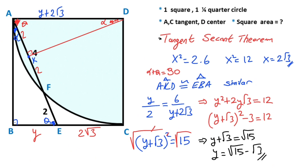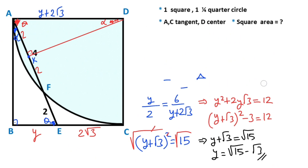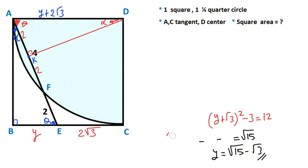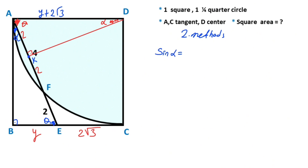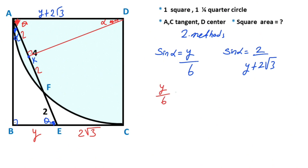Alternatively, here is a second method. If you focus on triangle ABE, we can calculate sine alpha: sine alpha equals y over 6. Likewise, if you focus on the other triangle, sine alpha is also equal to two over y plus two root three.